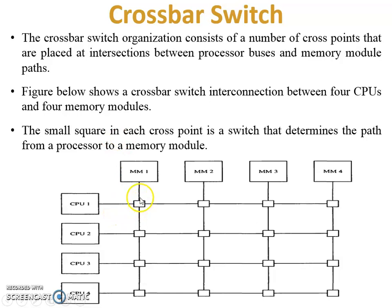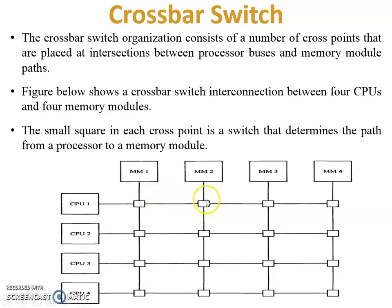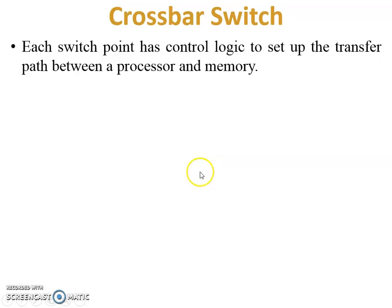The small square at each cross point is a switch that determines the path from a processor to a memory module. For example, when CPU 1 wants to access memory module 2, CPU 1 sends a request. The cross point checks the request, recognizes it is for memory module 2, and forwards it to the next cross point. That cross point also recognizes the request is for memory module 2 and forwards it directly to memory module 2.